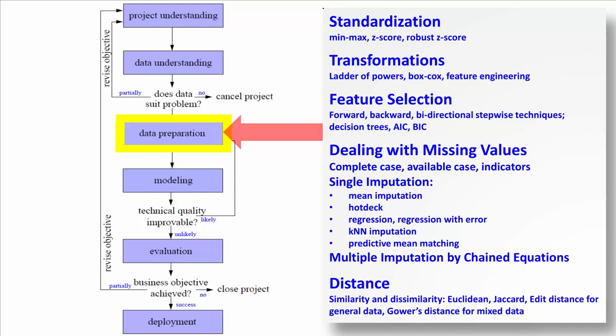We moved on to data preparation and talked about how we can deal with some of these issues. We talked about standardization, a variety of forms of standardizing our data, transformations including the ladder of powers, Box-Cox transformations, feature engineering in general, also feature selection: forward, backward, bi-directional stepwise techniques.